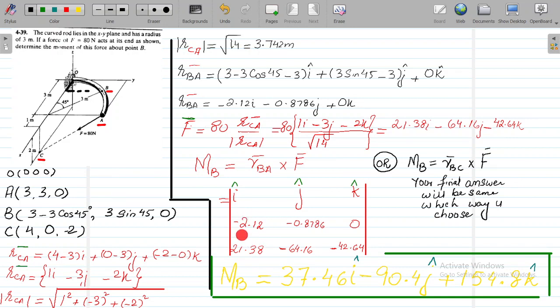This is RBA: minus 2.12i, minus 0.8786j, and 0k. This is our force in Cartesian vector form: 21.38, minus 64.16, minus 42.64. You basically simplify the determinant either through a calculator or manually. You will get MB equals 37.46i minus 90.4j plus 754.8k. So this is the moment about B after calculating position vector RBA cross vector F.